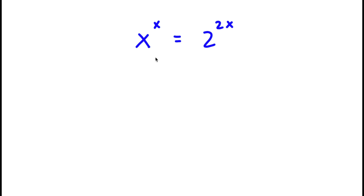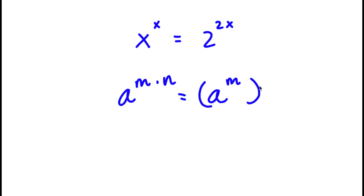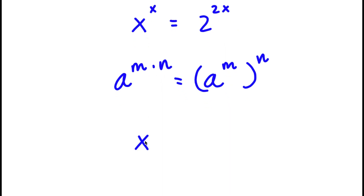If I have something in the form a to the power of m times n, this is the same thing as a to the power of m to the power of n. So 2 to the power of 2x, I'm going to rewrite that as 2 to the power of 2 to the power of x.